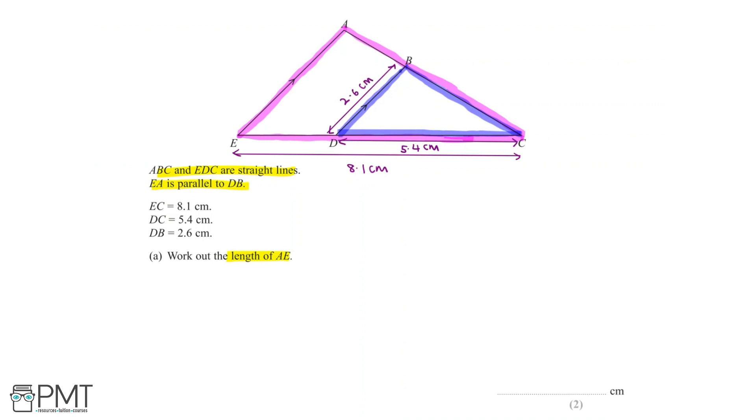Now that we've identified the two triangles in the diagram, we can see that we're working with similar triangles. Two triangles are said to be similar if their corresponding sides are in the same ratio. So in order to prove that two triangles are similar, we need to use their angles.